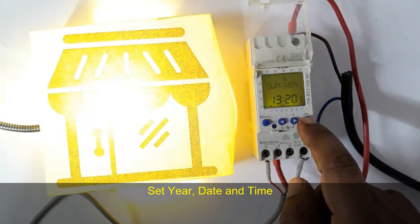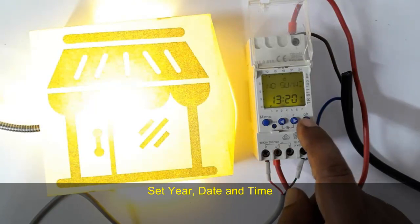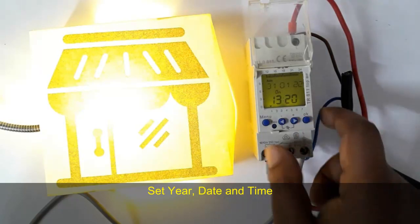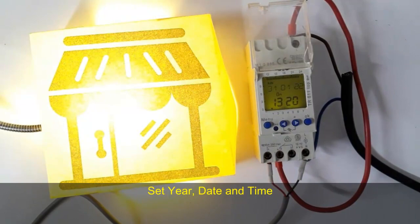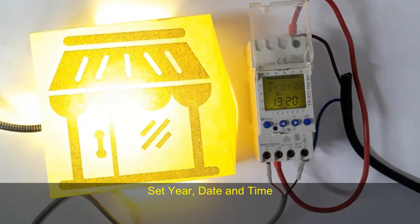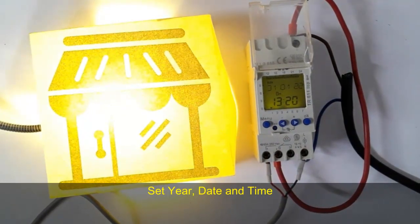The output is on because the date and timing right now matches the set program. The output is given at 13:20 minutes and the light's going on based on the previous set program.